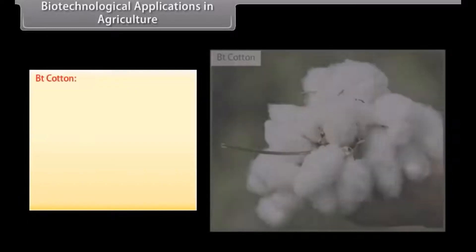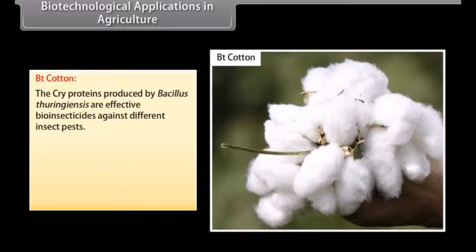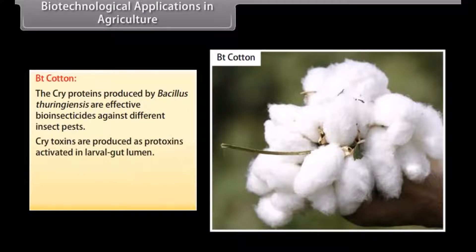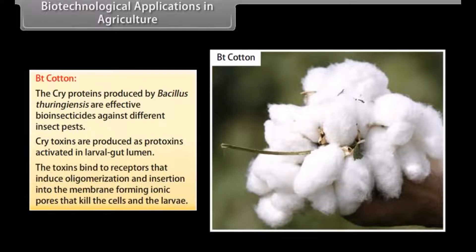BT cotton: The cry proteins produced by Bacillus thuringiensis are effective bio-insecticides against different insect pests. Cry toxins are produced as protoxins and activated in the larval gut lumen. The toxins bind to receptors that induce oligomerization and insertion into the membrane, forming ionic pores that kill the cells and the larva.